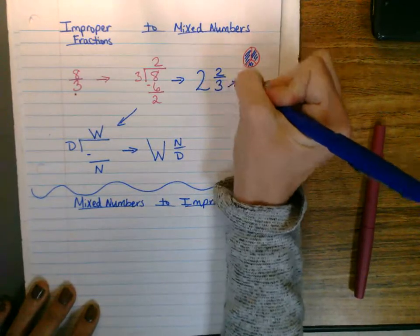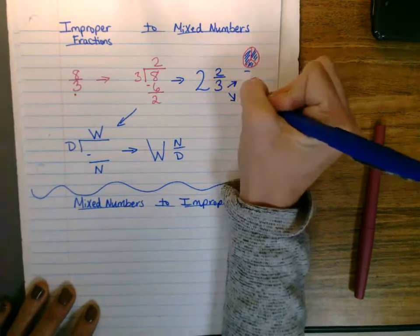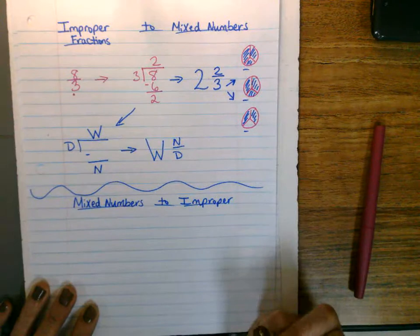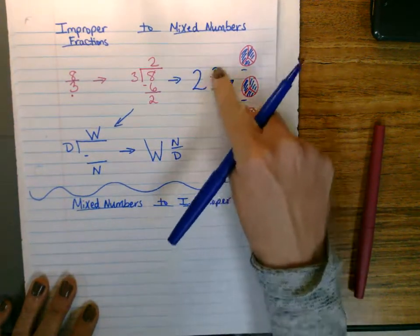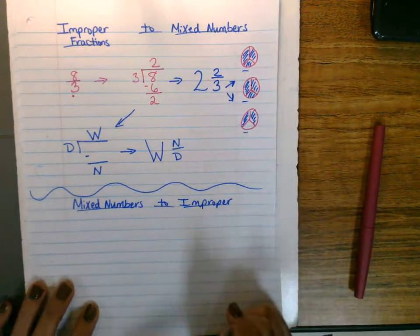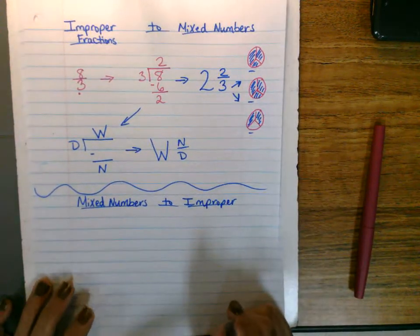And if you look, we have two holes and two-thirds. So instead of walking around saying eight-thirds, we can say two and two-thirds, which sounds and looks so much better.